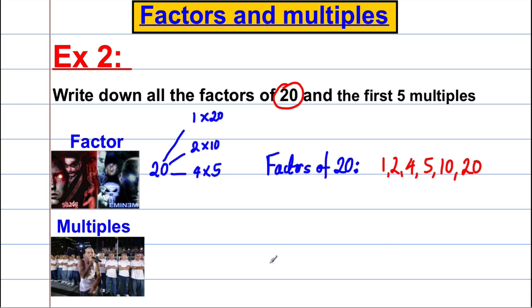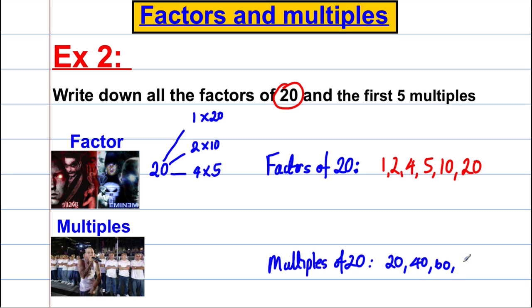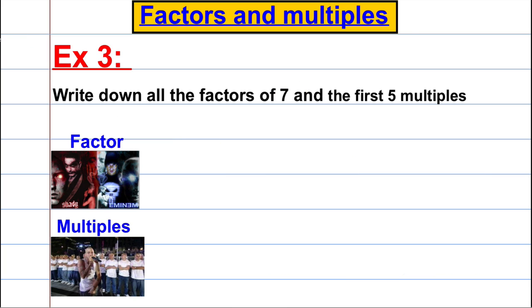The multiples of 20 are just many 20s: 1×20=20, 2×20=40, 3×20=60, 4×20=80, and 5×20=100. We're only asked for the first five, and we're done.